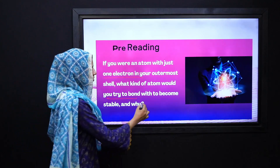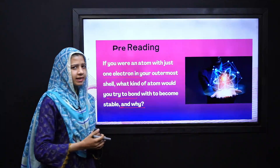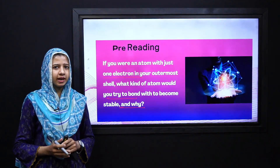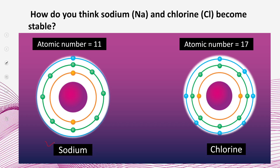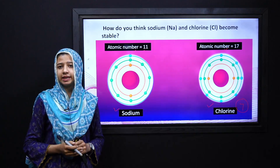Toh humare paas is question ke answer ko hum behter tarike se samajhte hain, ek example ke zariye. Let's suppose we have two elements — first one is sodium, whereas second one is chlorine. We know that sodium has atomic number 11 and chlorine has atomic number 17. Sodium ke valence shell ke andar ek electron hai, jabke chlorine ke valence shell ke andar seven electrons hain.